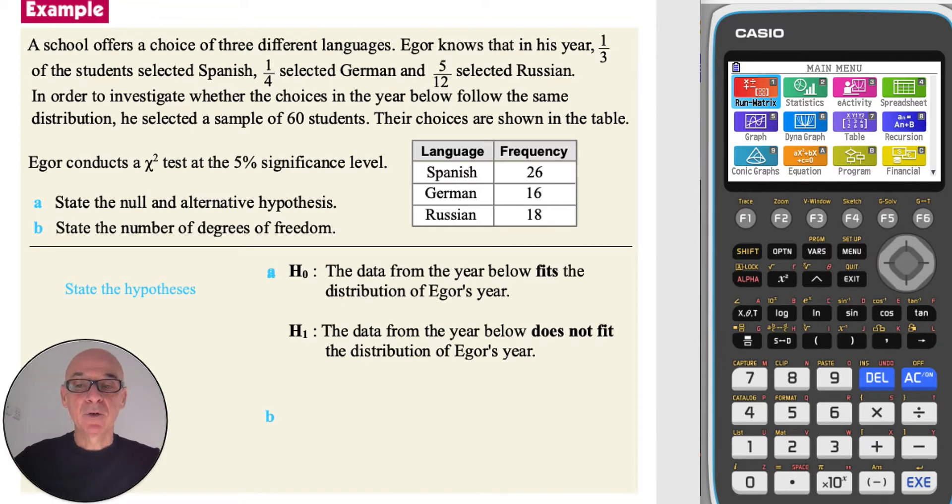In part B, we're asked to state the number of degrees of freedom. So we use the formula ν = n - 1, where n is the number of categories, in this case 3. 3 minus 1 equals 2, so there are 2 degrees of freedom.